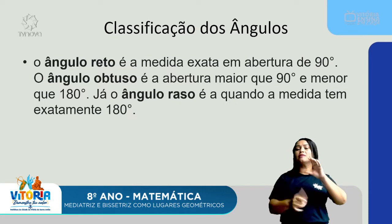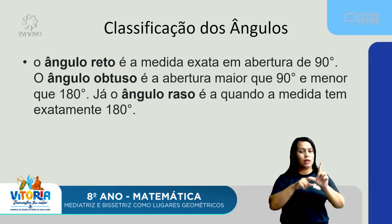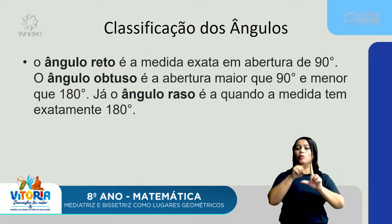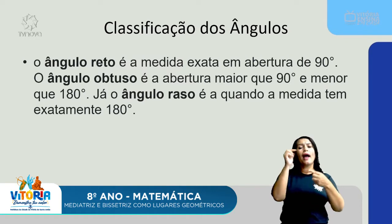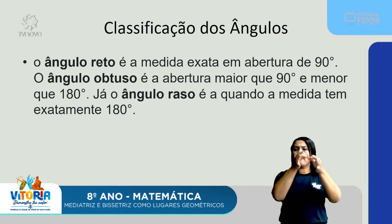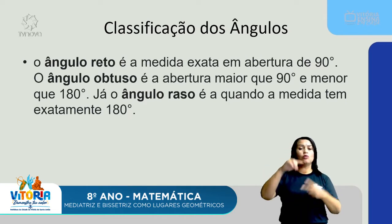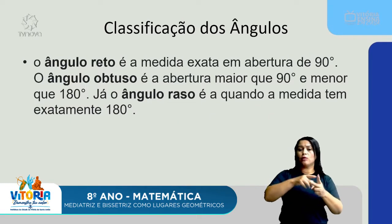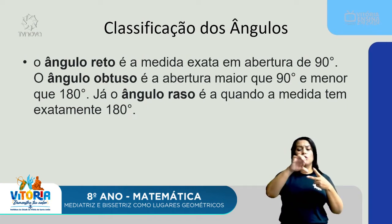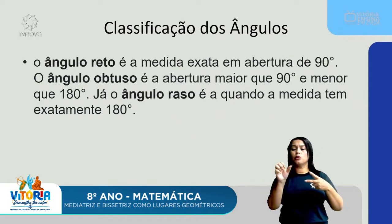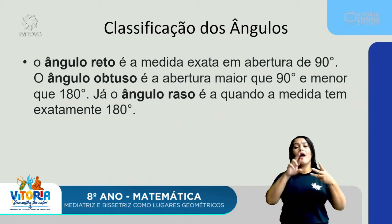Classificação dos ângulos. Nós temos três tipos de ângulo: o ângulo reto, o ângulo obtuso e o ângulo raso. O ângulo reto é a medida exata de 90 graus. O ângulo obtuso é a abertura maior que 90 graus e menor que 180. E o ângulo raso é quando a medida tem exatamente 180 graus.